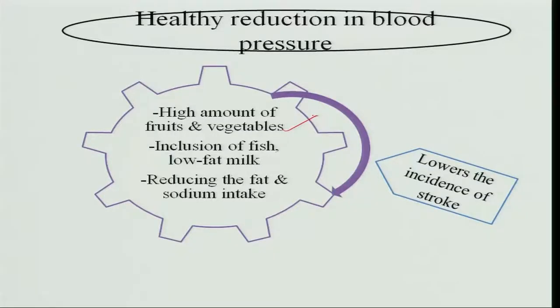A healthy reduction in blood pressure can be achieved by taking high amounts of vegetables, inclusion of fish — which should be boiled, not fried and not salty — low-fat milk, and reducing fat and sodium intake. All these will help in reducing blood pressure, thereby reducing the chances of heart stroke.